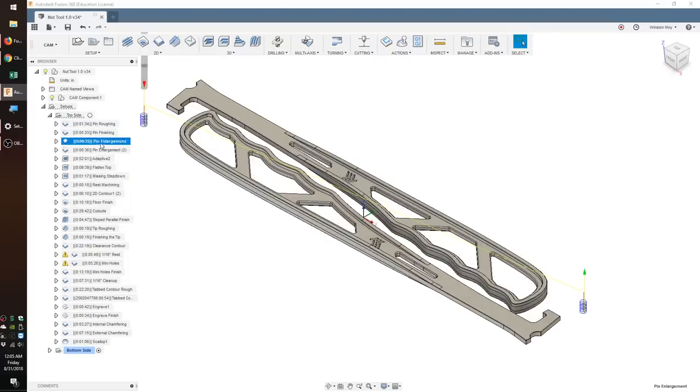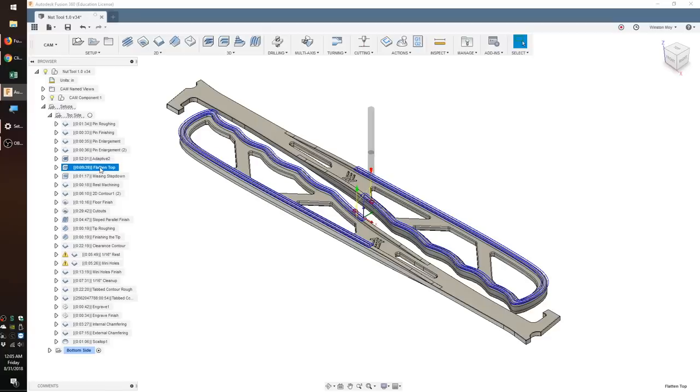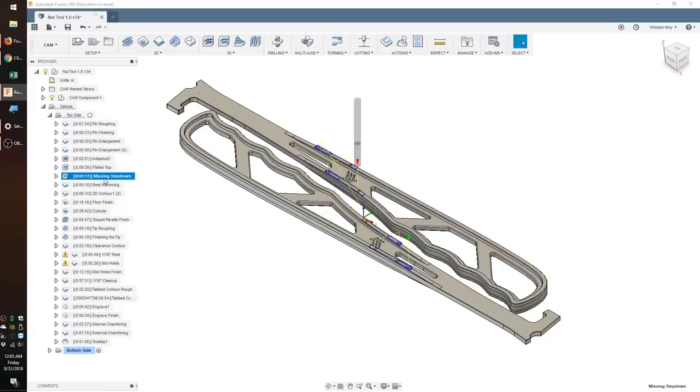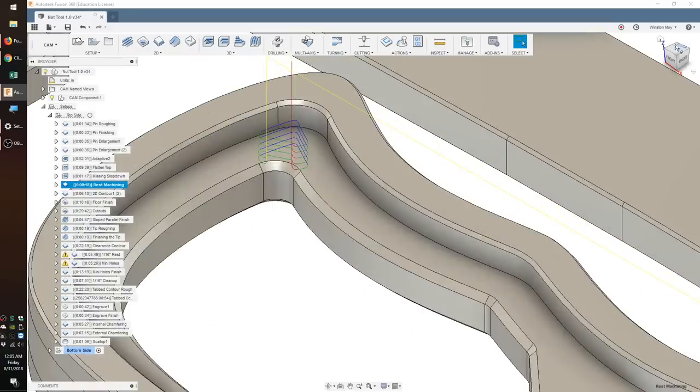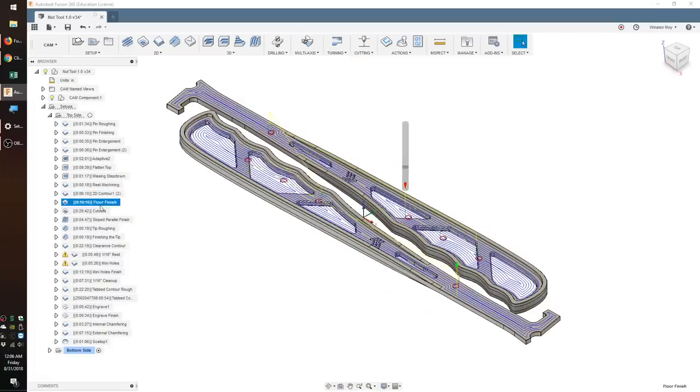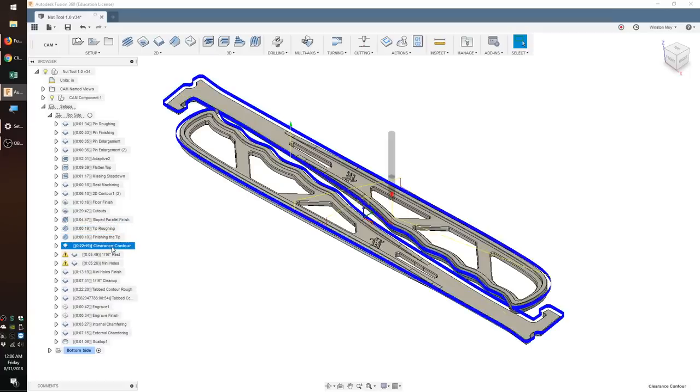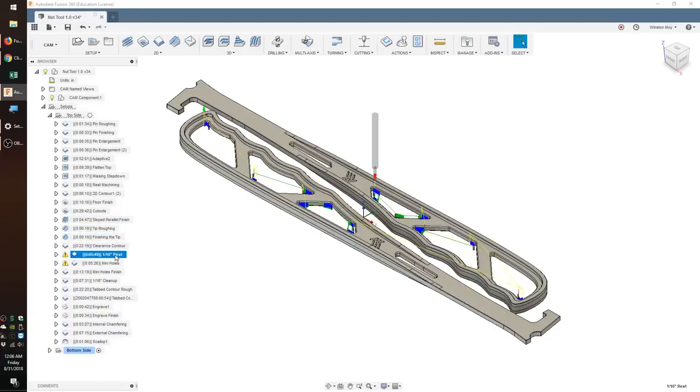The order of operations was as follows. Rough out the part from the top using an adaptive clear and an eighth inch end mill. Use pockets and contours to true up as much of the part as possible. Use a parallel operation to shape the tapered parts of the tool. Then, since I hate slotting deeper than the diameter of my cutter in aluminum, I used the eighth inch end mill to cut out the first tenth of an inch of my outer profile.